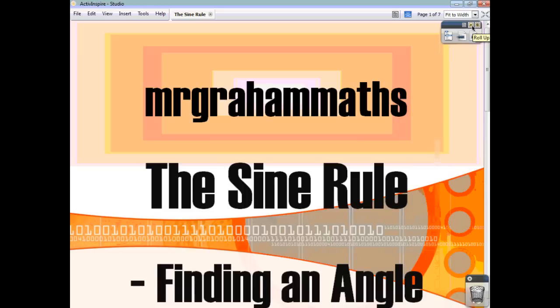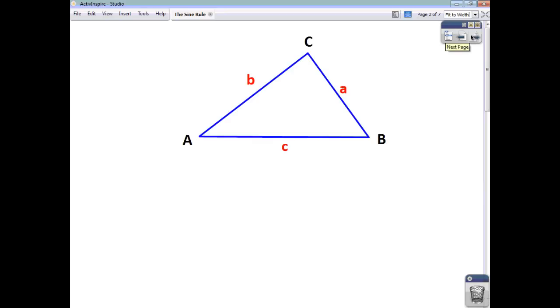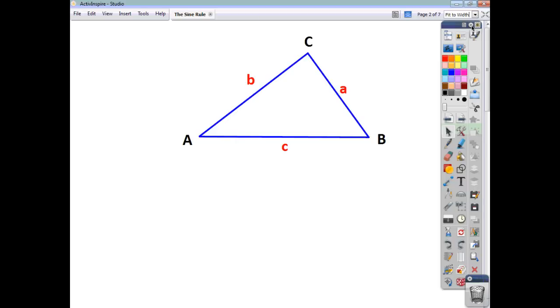In this video, we're going to have a look at how to use the sine rule to find a missing angle. Now, with all of the trig formulae you'll be given in your formula sheet, they will all relate to this type of triangle, where you have a triangle ABC and each of the sides of the triangle are given a name which relates to the angle opposite the side. So, side C is opposite angle C, side B is opposite angle B and so on.